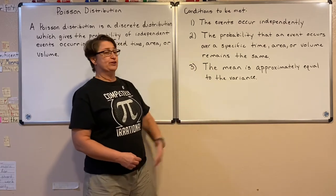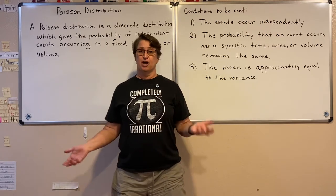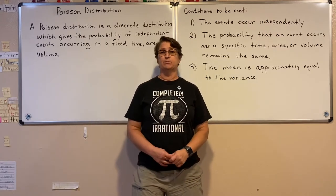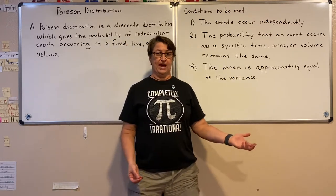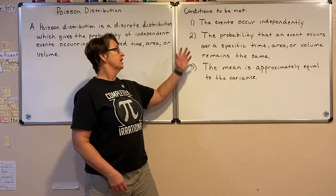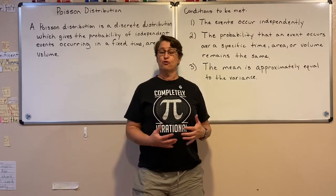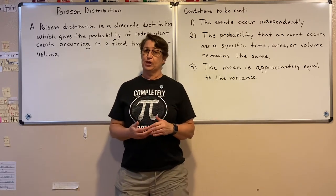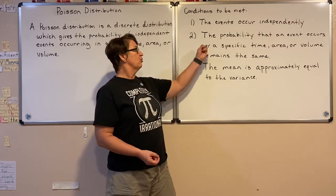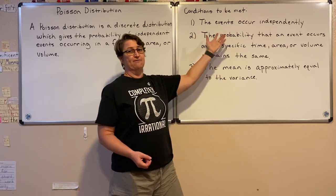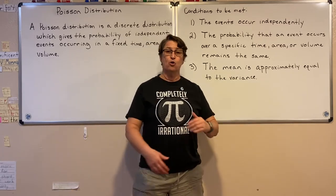In order for it to be Poisson, the events must occur independent of one another. Each one must be completely independent. Just because one happens doesn't mean another one is going to happen. And the probability of each event occurs the same over that area of time, area, or volume — in other words, it's a random event. So they are random, independent events that happen in a specific time frame, area, or volume.